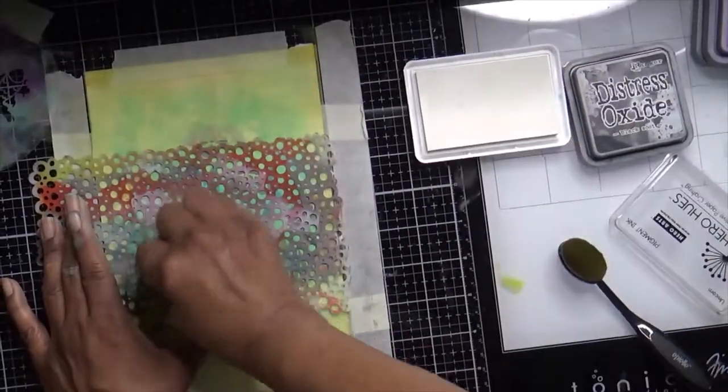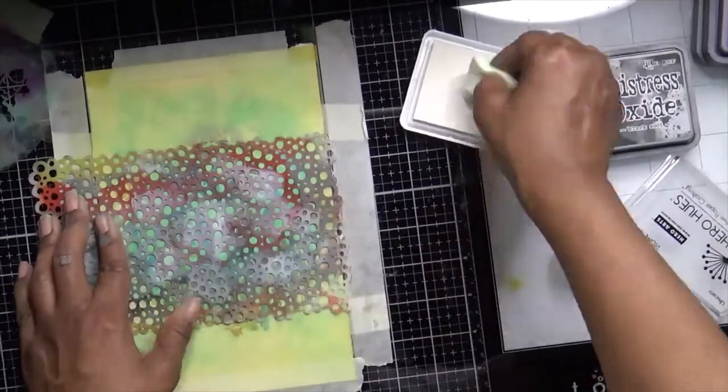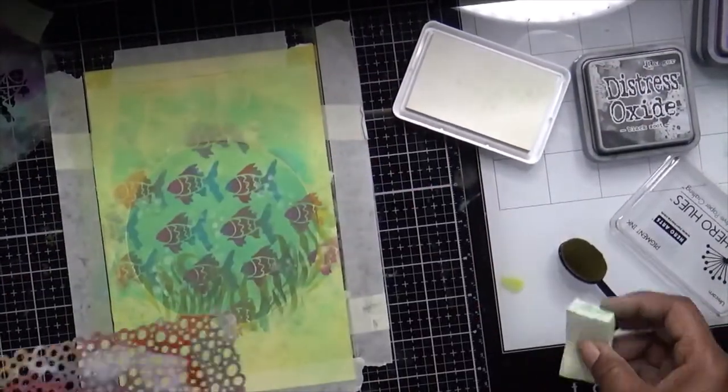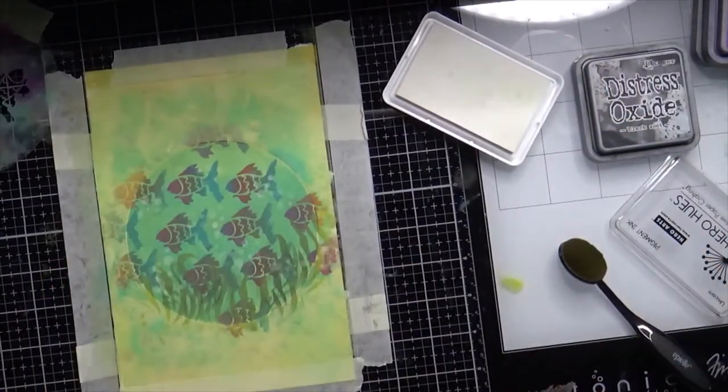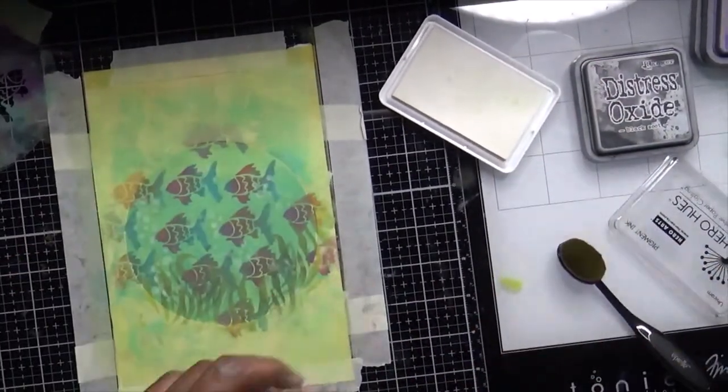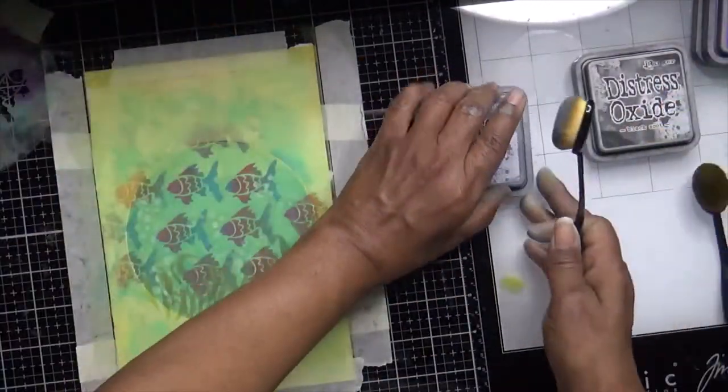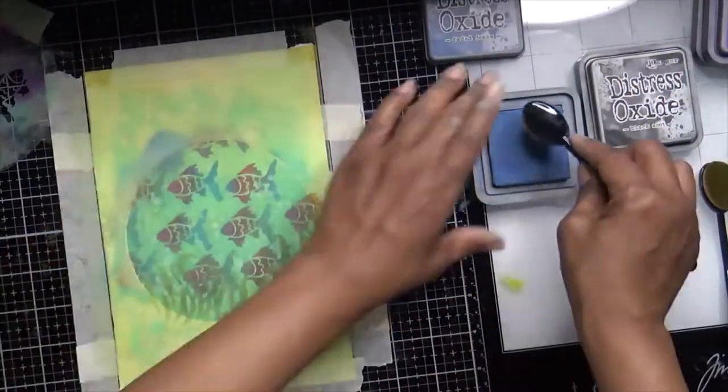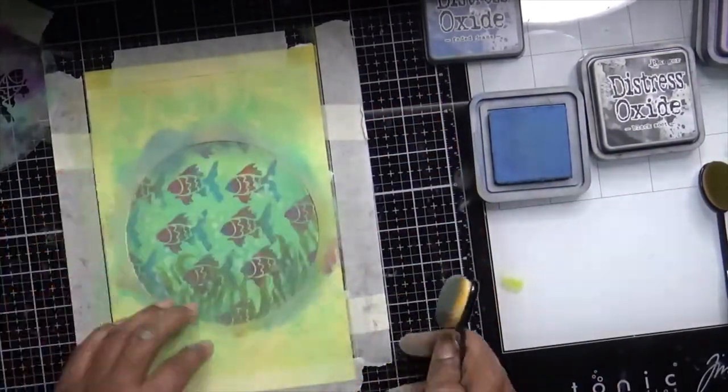I want to add a little bit of some bubbles and I'm using Hero Arts. I don't know the name of this particular white, I can't remember. But anyway, I'm adding that here and there. I'm just trying to keep the overall softness of this art journal page.